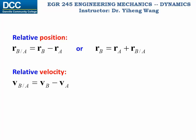And this can also be rewritten as VB equals VA plus VB/A. And similarly for acceleration, the relative acceleration B relative to A equals AB minus AA, or it could be written this way. Keep in mind that all these equations are given in vector form.